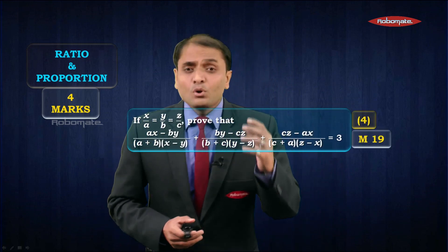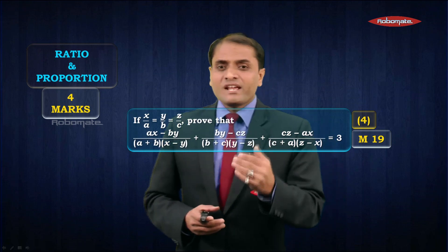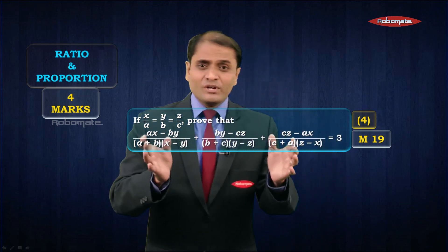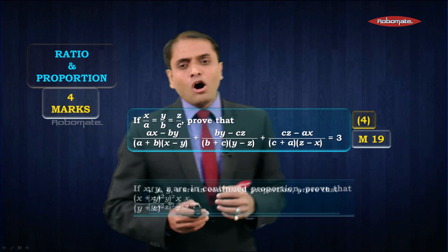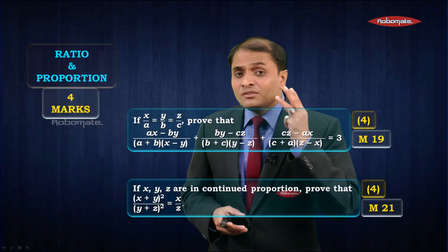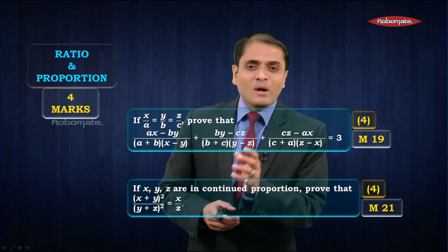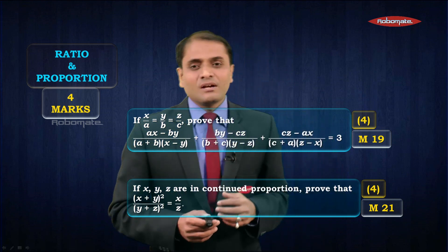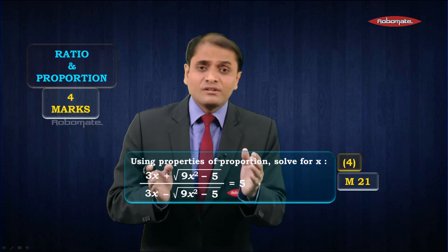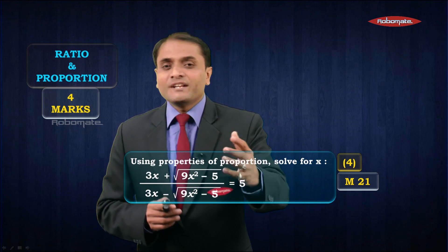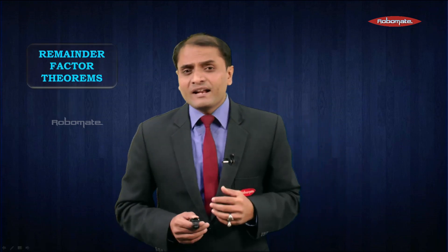The next chapter is ratio and proportion — one question of four marks. You can have a 'prove that' type question based on equal ratios, for example where x/a = y/b = z/c and you have to prove a given equation in proportion. We follow the k-method for this; details are in module 19. Or you can have a 'prove that' question based on three numbers in continued proportion. There is also a type where they give you an equation on x that can be solved using properties of proportion, that is componendo-dividendo.